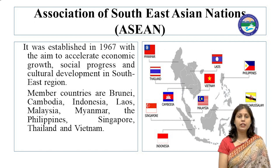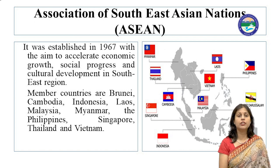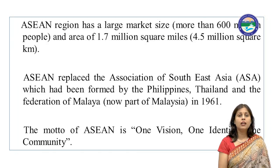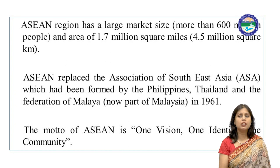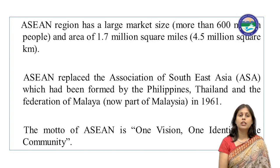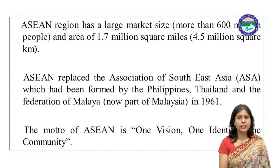The ASEAN member countries are Brunei, Cambodia, Indonesia, Laos, Malaysia, Myanmar, the Philippines, Singapore, Thailand, and Vietnam. The ASEAN region has a large market size — approximately 600 million people, an area of 1.7 million square miles or 4.1 million square kilometers. ASEAN replaced the Association of Southeast Asia, which had been formed by the Philippines, Thailand, and the Federation of Malaya in 1961. ASEAN's motto is: one vision, one identity, one community.